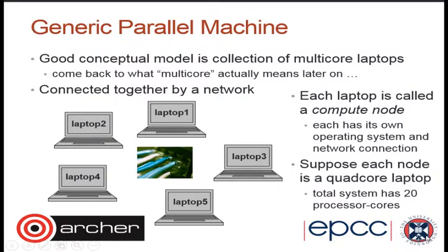Often when we're solving things in parallel, we need to send messages around to support this, and we want this communication to happen as quickly as possible. Nowadays, laptops aren't single-core but multi-core. Your processor package actually contains a number of processor cores — dual-core means two processor cores, quad-core means four. So these compute nodes tend to have a number of processor cores within them. If these were quad-core laptops, overall we'd have 20 processor cores to execute over. That's a general overview of what a very generic parallel machine might look like.